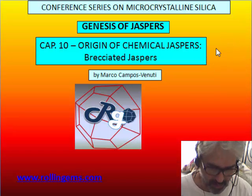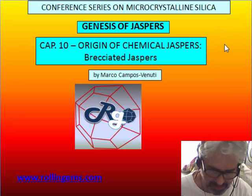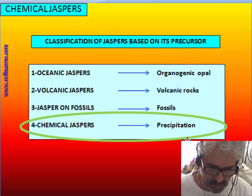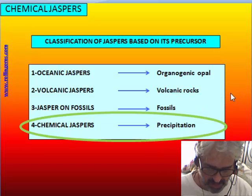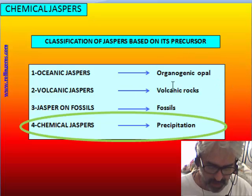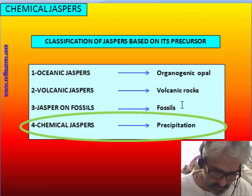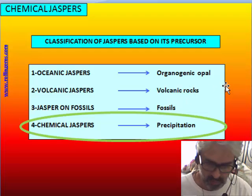In this chapter we will talk about a group of chemical jasper characterized by a brecciated structure: the brecciated jasper. In our classification of jasper based on the precursor, chemical jasper are the group where the jasper results from direct precipitation from solution. The other group are the transformation of organogenic opal, of volcanic glass, or fossil material like wood or bone.